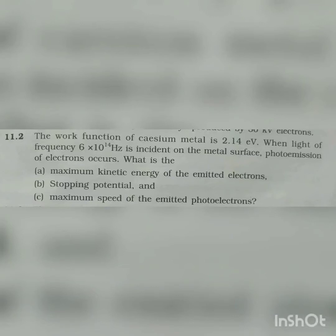Exercise 11.2. The work function of cesium metal is 2.14 electron volt. When light of frequency 6 into 10 raised to 14 hertz is incident on the metal surface, photo emission of electrons occurs. What is the maximum kinetic energy of the emitted electrons, stopping potential, and the maximum speed of the emitted photo electrons?